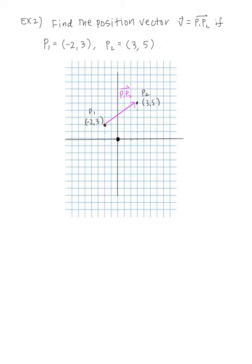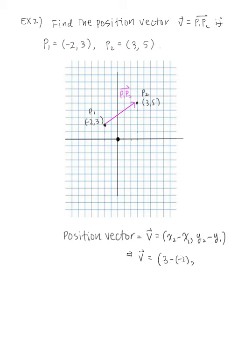To find the position vector, we follow the formula: V equals x2 minus x1 comma y2 minus y1. So V equals 3 minus negative 2 comma 5 minus 3, which gives us V equals 5 comma 2.